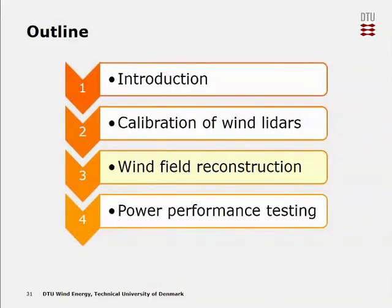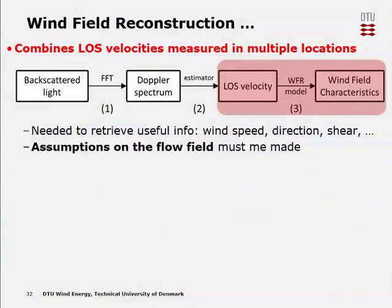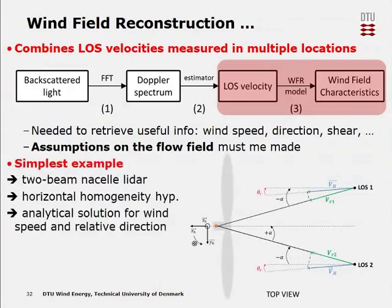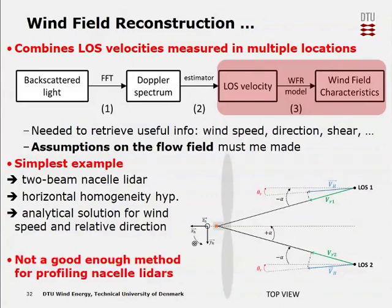We now have the uncertainty of our inputs for the wind field reconstruction algorithm, but we don't know how to combine line-of-sight velocities from multiple locations — that is the purpose of the next part. We are at this stage of the LiDAR measurement chain and need methods to retrieve useful information such as speed, direction, and shear. For that, we need to make assumptions about the flow field. The simplest example with a two-beam nacelle LiDAR assumes horizontal homogeneity — that wind speed and direction is the same at a given height — yielding an analytical solution.